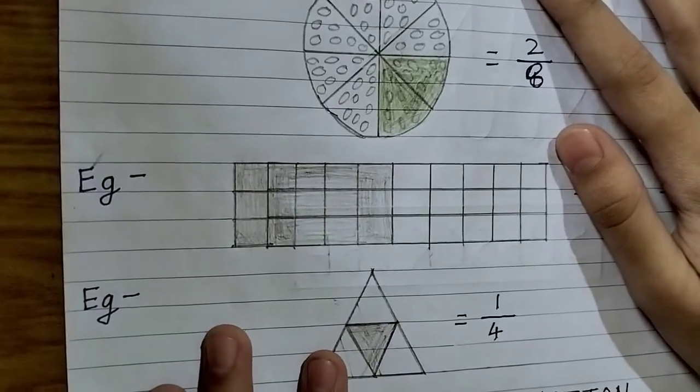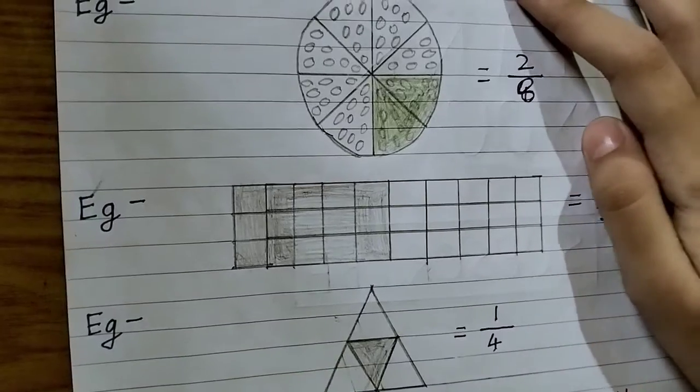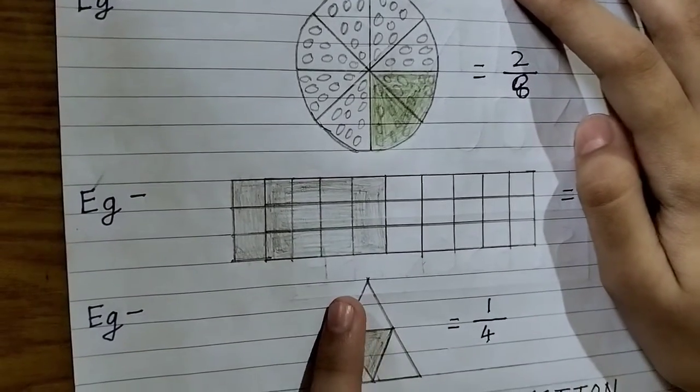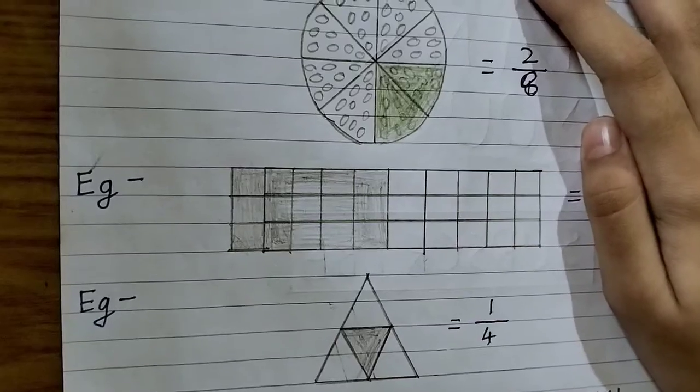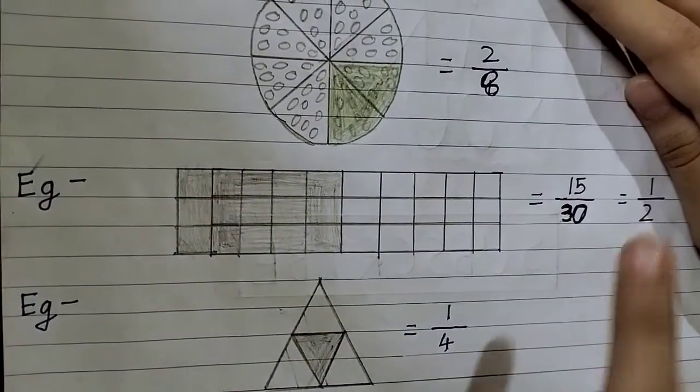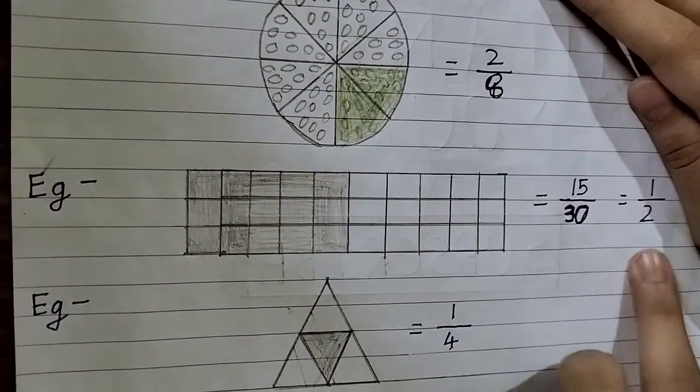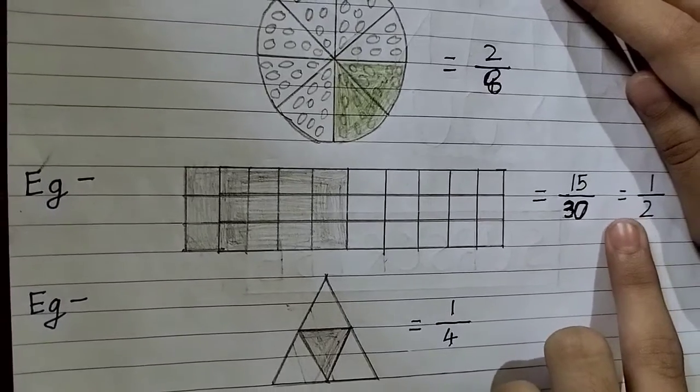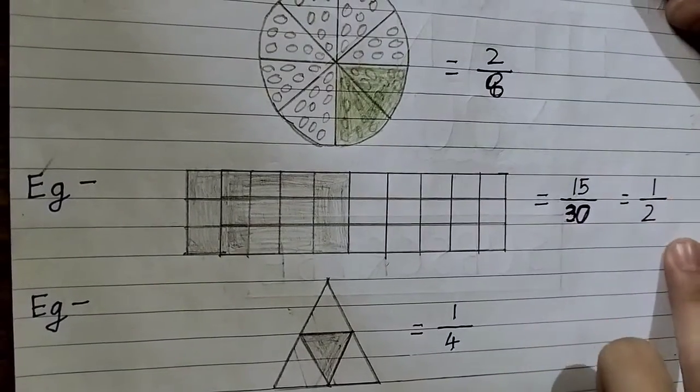Here we have some blocks. We have total 30 of the blocks and I have shaded 15. What will be the fraction? It will be 15 by 30 and we can also express it as 1 by 2.